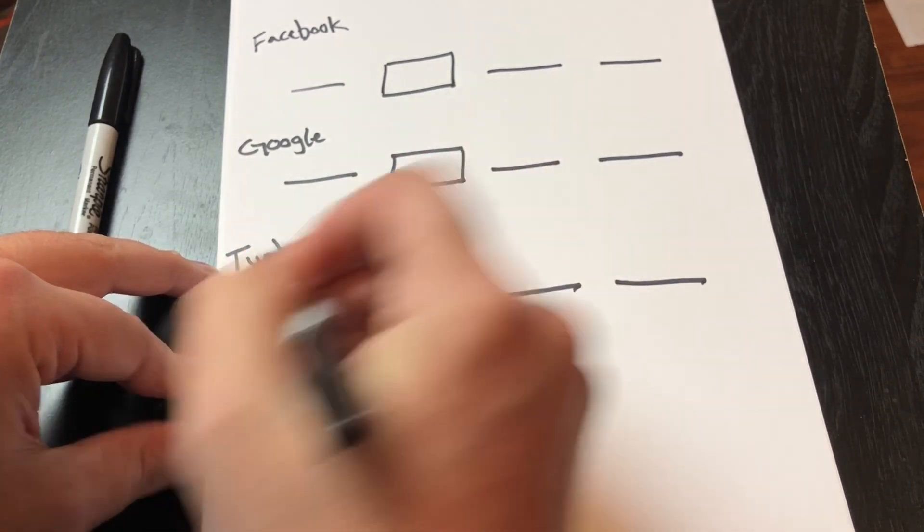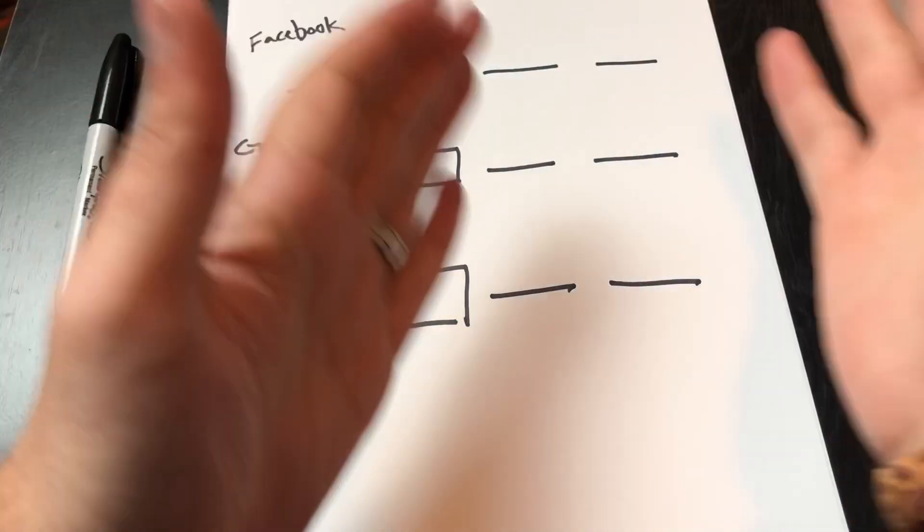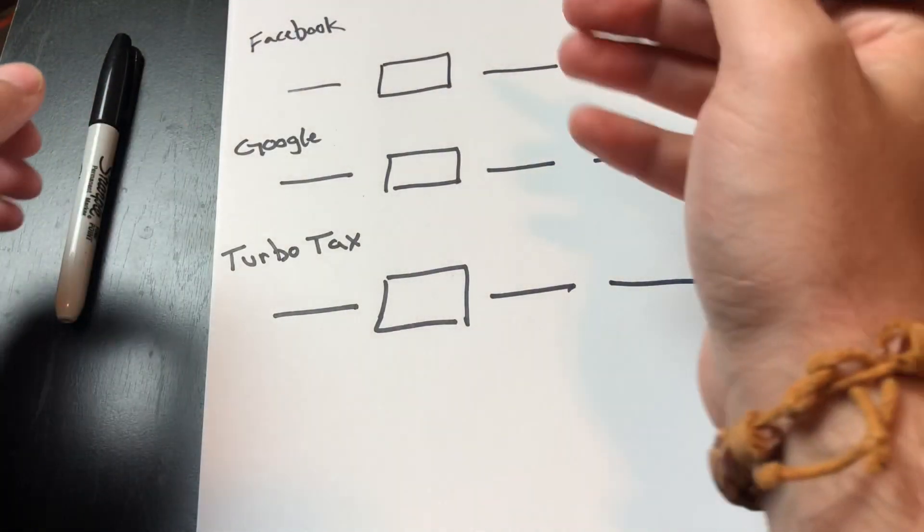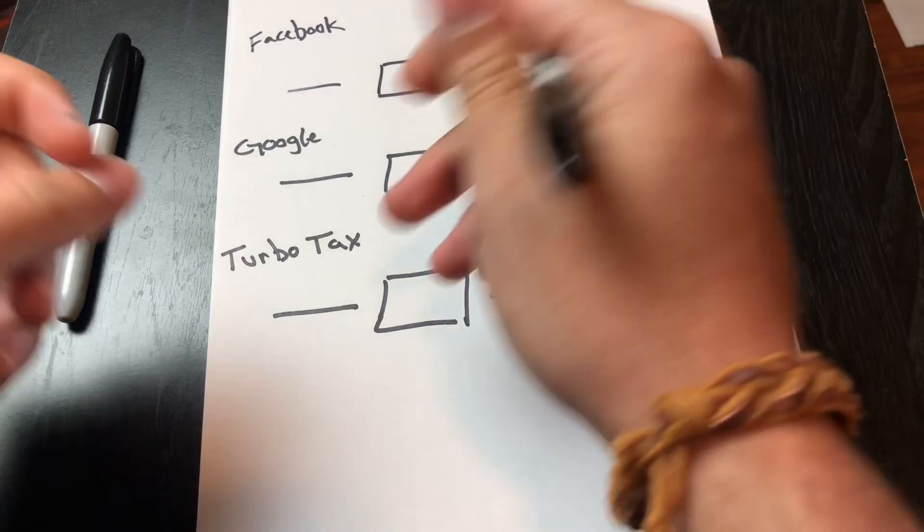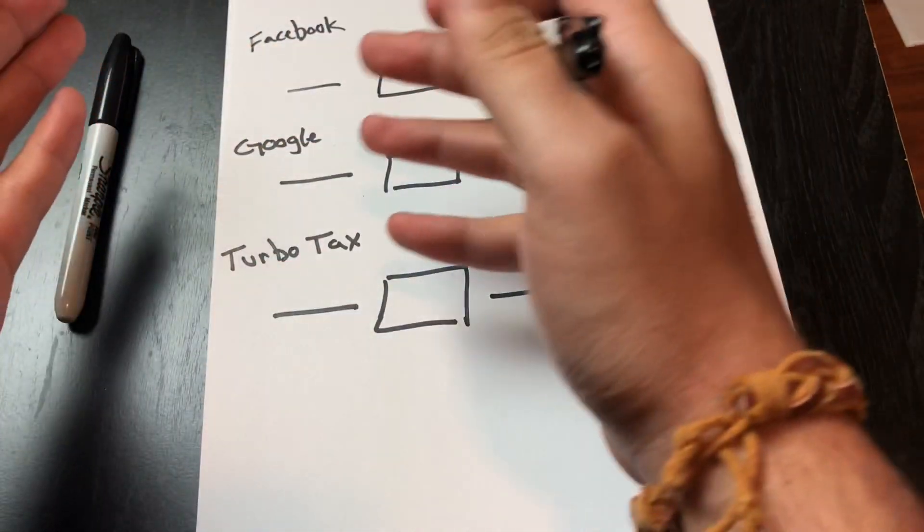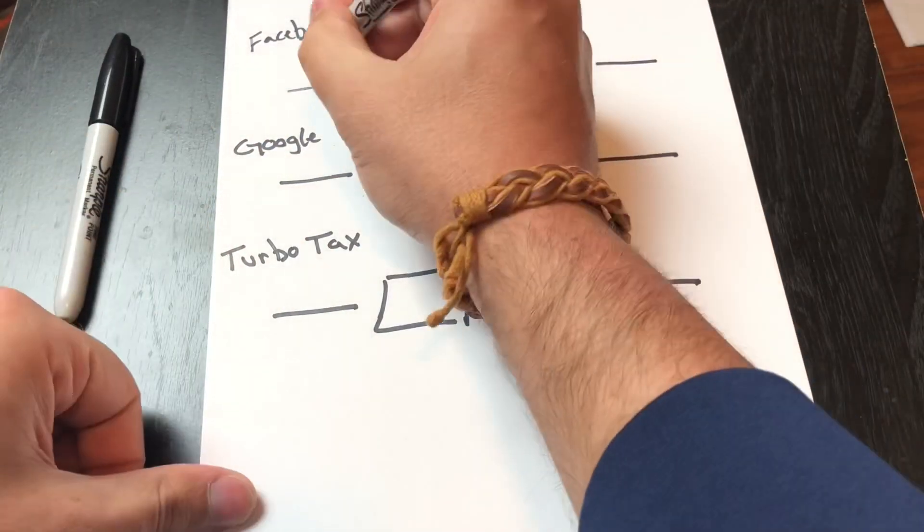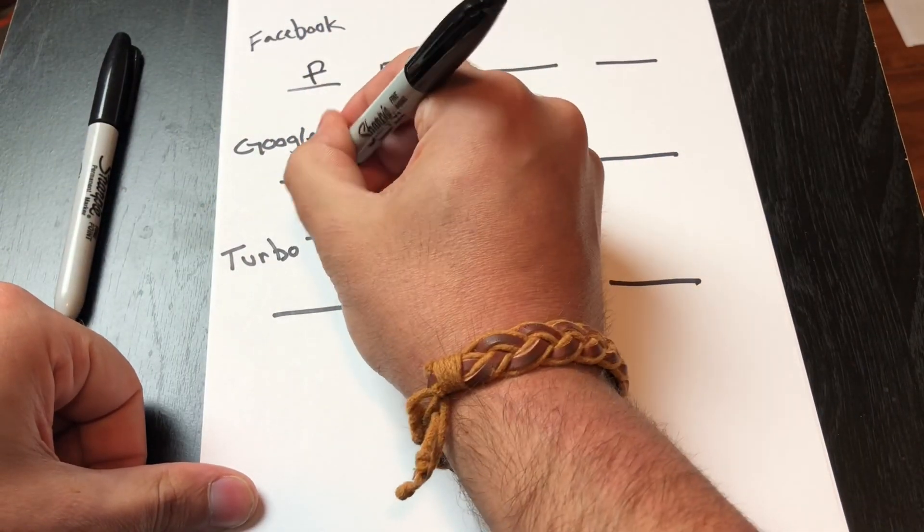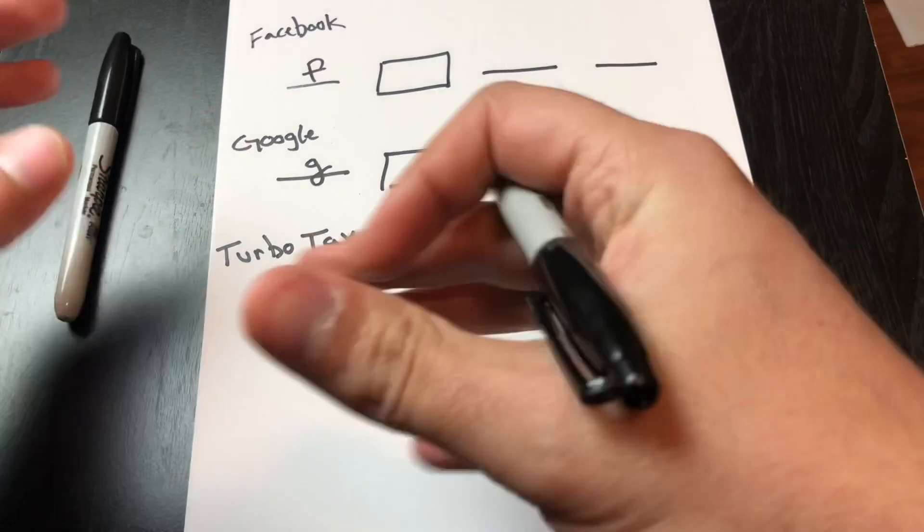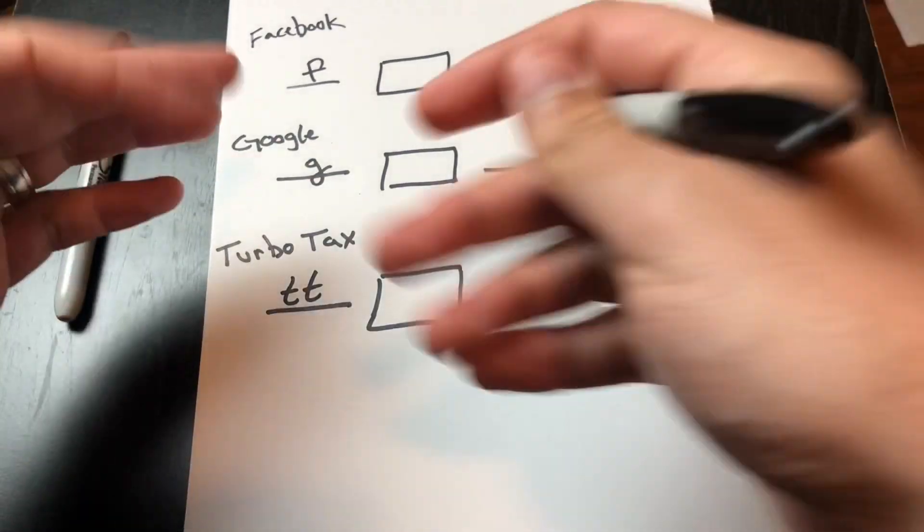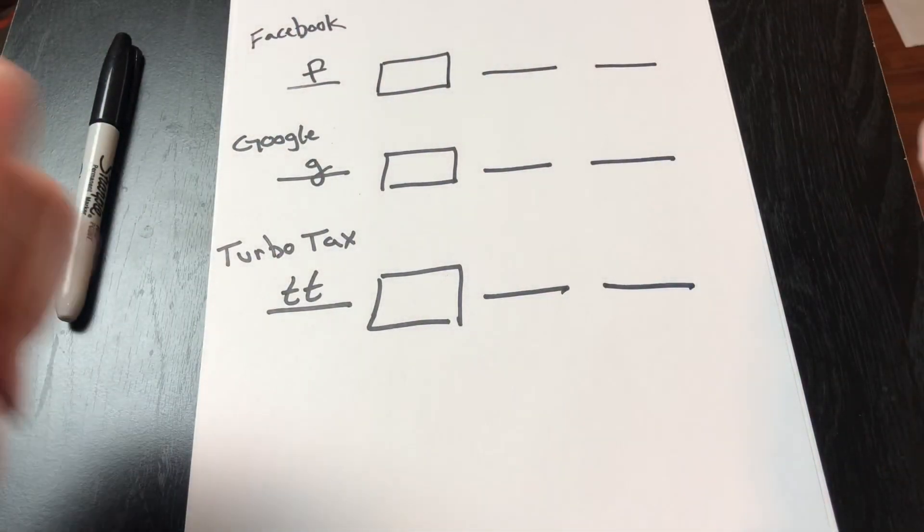It's really a four part system and the first part is pretty straightforward. What you're going to do in the first section is you're just going to take the first letter of each of the words in the application's name. So for Facebook it's going to be F, Google it's going to be G, for TurboTax you can do TT. Again, this will vary depending on what application you're using but pretty straightforward. You can change this, you can use the first four letters, however you want to do it. I keep it pretty simple just so I don't get confused.